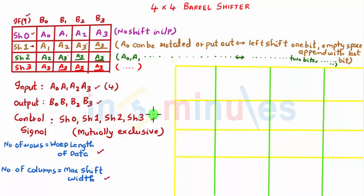And the number of columns is the maximum shift width. The maximum shift width is 4 again, so the number of columns are also going to be 4. And if you don't understand this way, it's a 4 cross 4 barrel shifter so that also will give you the same thing.